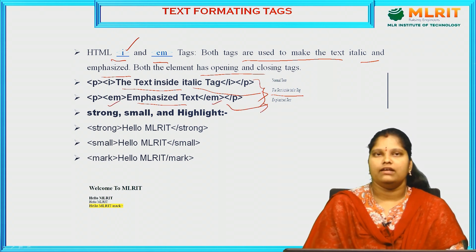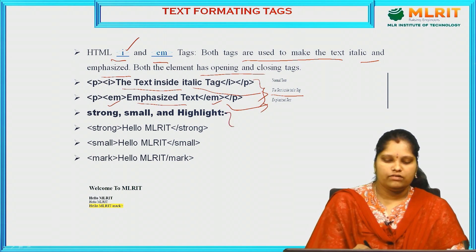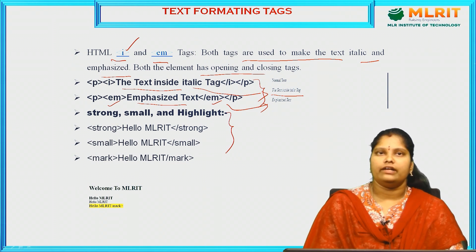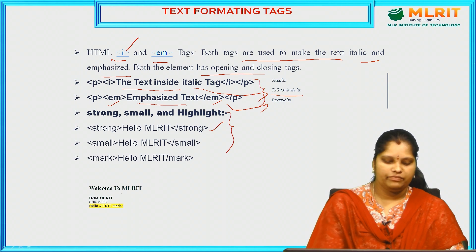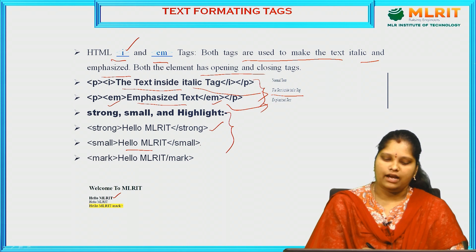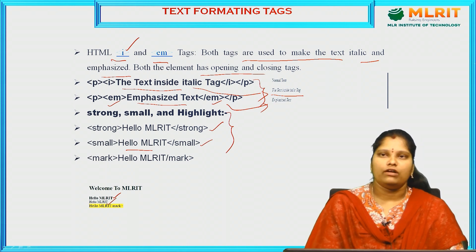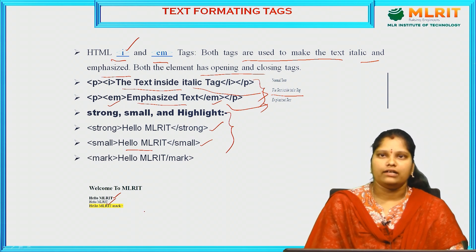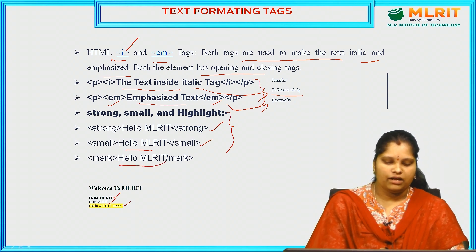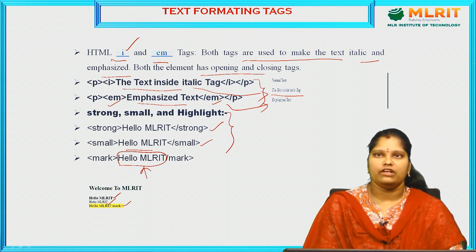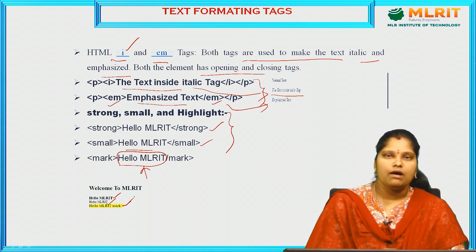A few more text formatting tags are strong, small, and mark. Whatever content you write inside the strong tag displays bold. Content inside the small tag prints as small text — for example, 'hello MLRT' appears smaller. Content inside the mark tag is highlighted. If you want to highlight any information in your webpage, use the mark tag.